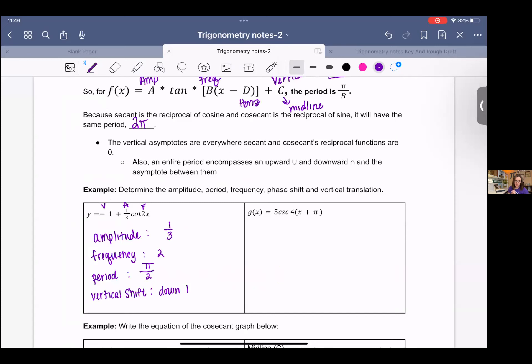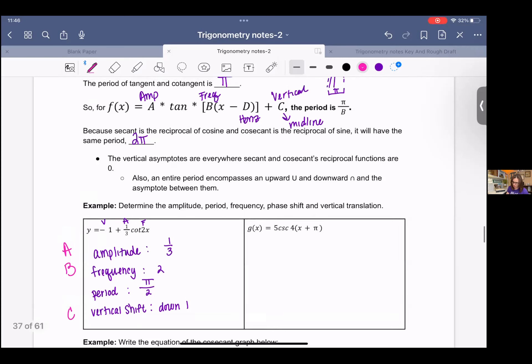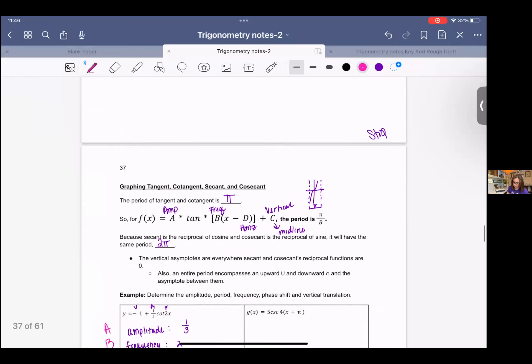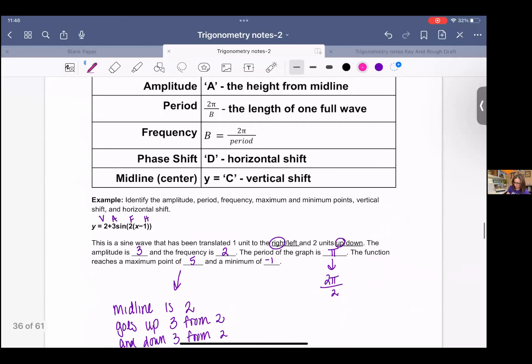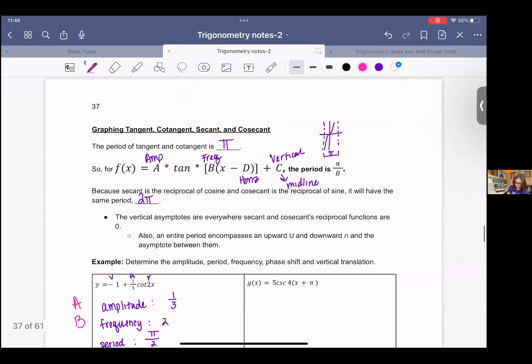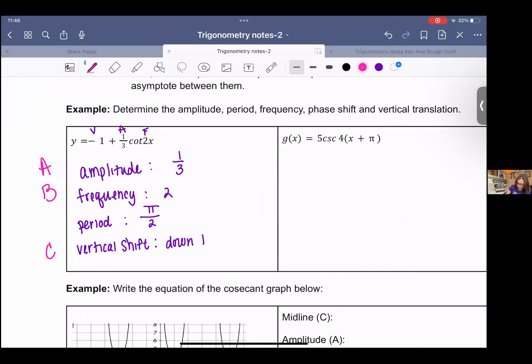If it helps, you can label these instead with the letters that we used up above at the top line on the page here. Amplitude is A, frequency is B. The vertical shift was C and period. Sorry, let me go up. Pi over B. Sorry about that. Because this is cotangent. So it's pi, not 2 pi.